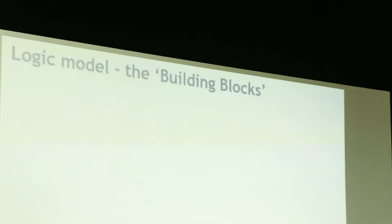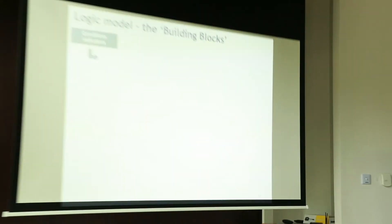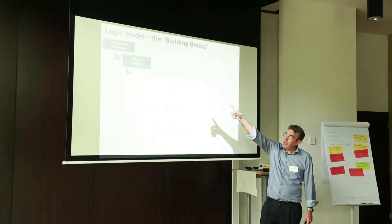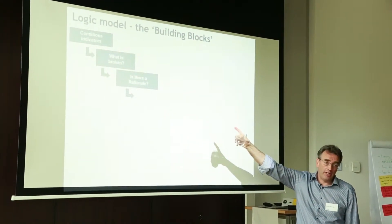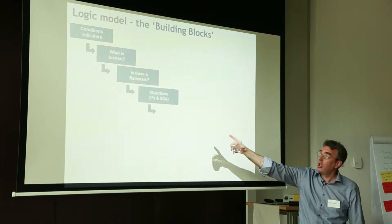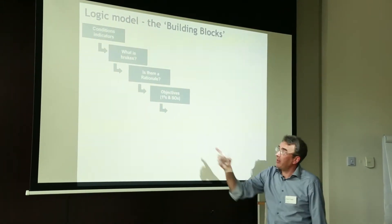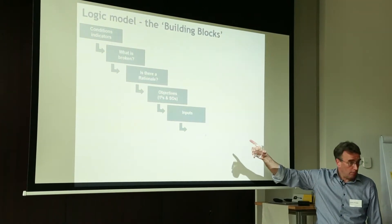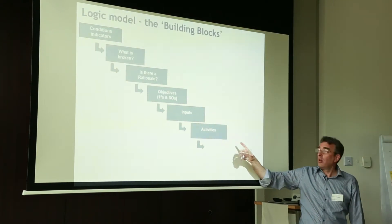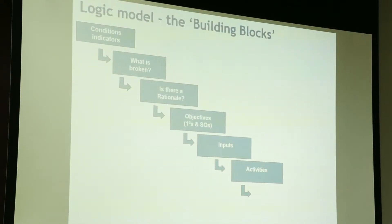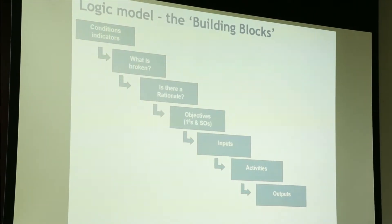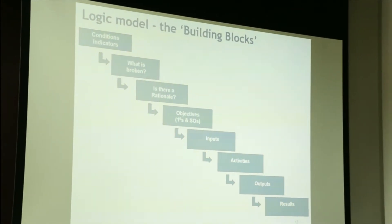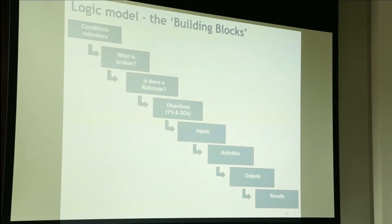And you'll have all seen this diagram or something like it. The basic building blocks of a logic model start: the conditions - what's broken that we need to fix? What are the indicators? What's broken? What's our rationale for intervening to fix it with taxpayers', European taxpayers' cash? What, in the light of that rationale, are the objectives we want to set ourselves? What, in the light of those objectives, inputs do we require? What those inputs allow us to do activity-wise? What those activities give rise to? Outputs. Which then gives rise to results. And the loop that then closes that off is what?